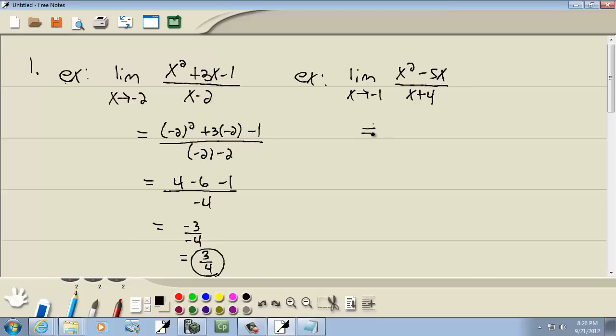And again, with direct substitution, you just take that number and plug it in for your x. So, we're going to have negative 1 squared minus 5 times negative 1 over negative 1 plus 4.